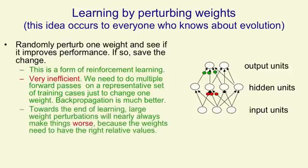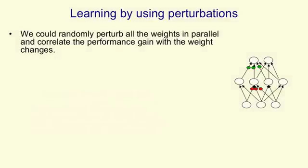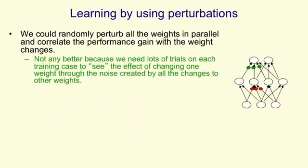An additional problem with randomly changing weights and seeing if it helps is that towards the end of learning, any large change in a weight will nearly always make things worse, because the weights have to have the right relative values to work properly. So towards the end of learning, not only do you have to do a lot of work to decide whether each change helps, but the changes themselves have to be very small. One thing we might try is to perturb all the weights in parallel and correlate the performance gain with the weight changes — but that doesn't really help at all. We need lots and lots of trials with different random perturbations to see the effect of changing one weight through all the noise created by changing all the other weights.